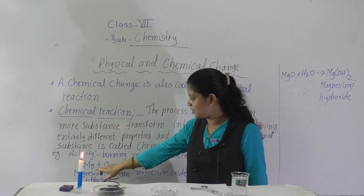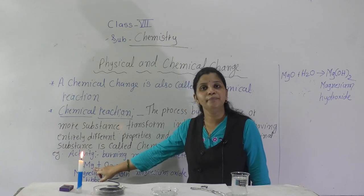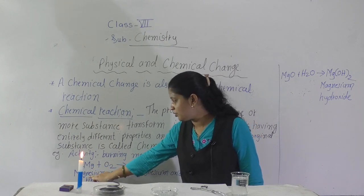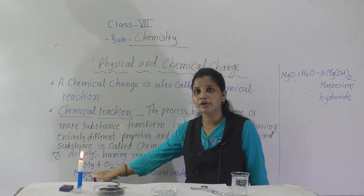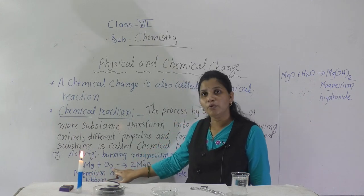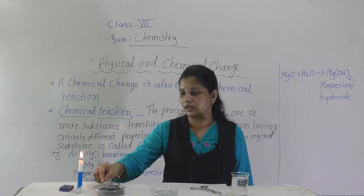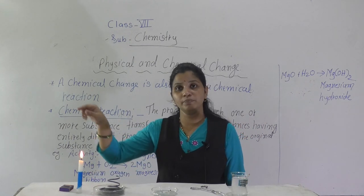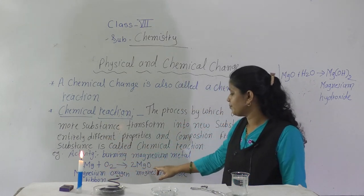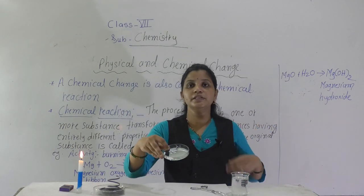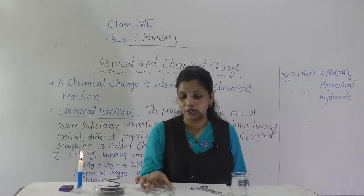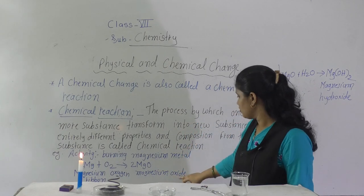See here — I have written the reaction. That is: Mg + O₂. Mg is the symbol for magnesium. Magnesium plus O₂ — oxygen present in our surroundings — when magnesium reacts with oxygen, it forms magnesium oxide. The white ash in the petri dish is magnesium oxide. So here a totally new substance is formed.